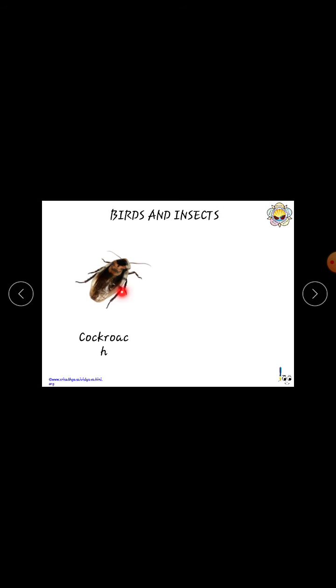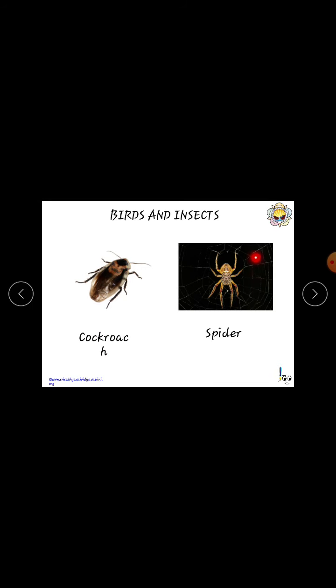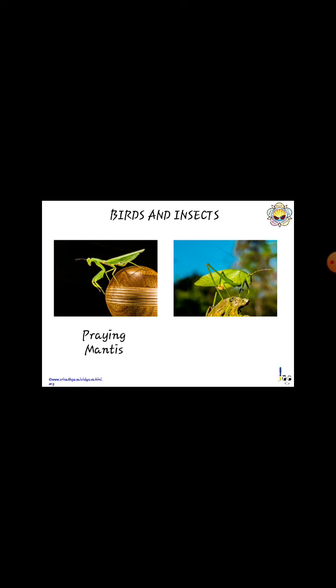Observe here — one, two, three, four, five, six — six legs and two feelers. Cockroach, C-O-C-K-R-O-A-C-H. Spider, S-P-I-D-E-R. Spider lives in a web — it constructs the web and lives in the web. Praying mantis, P-R-A-Y-I-N-G M-A-N-T-I-S. Grasshopper, G-R-A-S-S-H-O-P-P-E-R. These all are examples for insects.